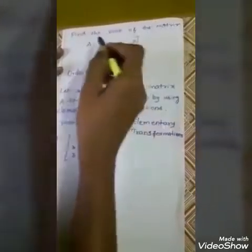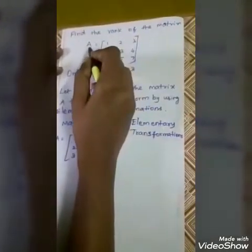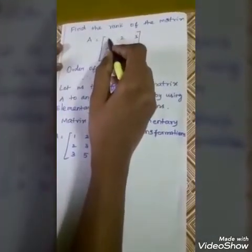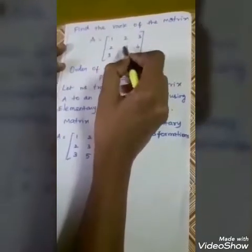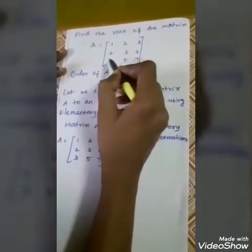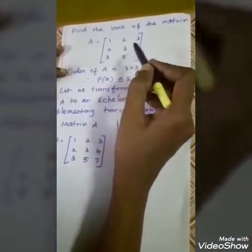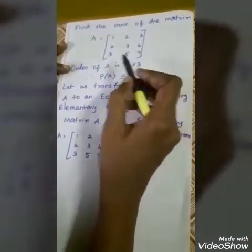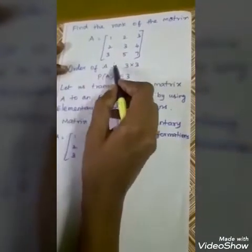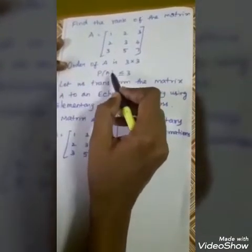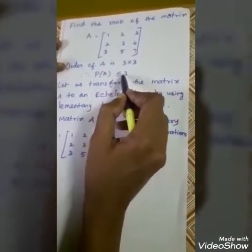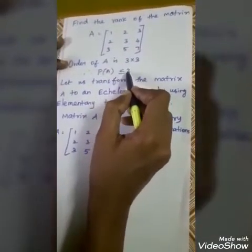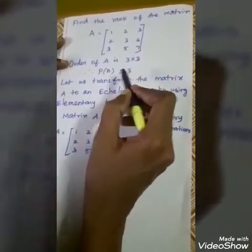Find the rank of the matrix A equals [1, 2, 3; 2, 3, 4; 3, 5, 7]. This is a 3x3 matrix. Order of A is 3x3. Therefore, rank of A will be less than or equal to 3.